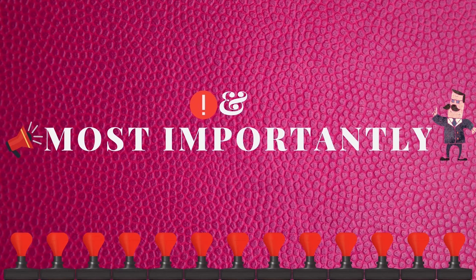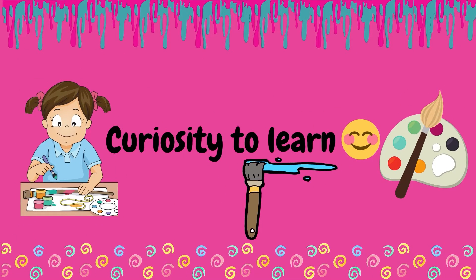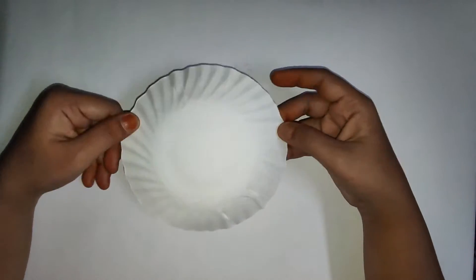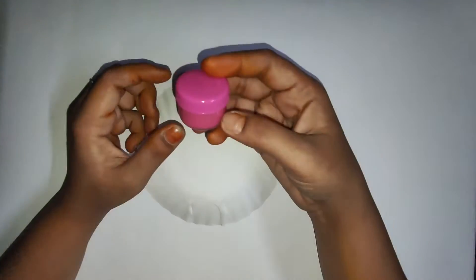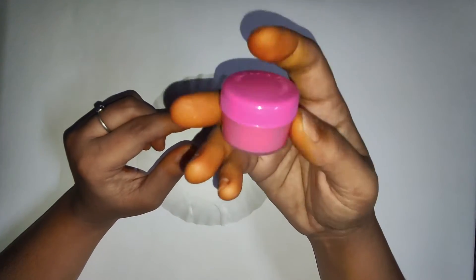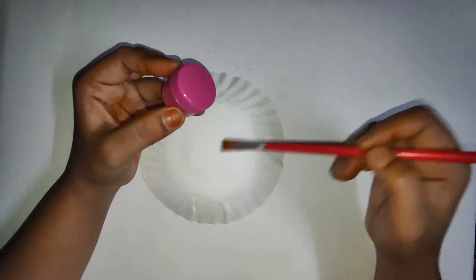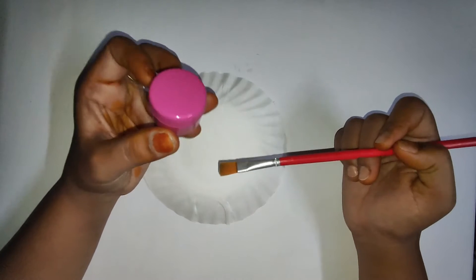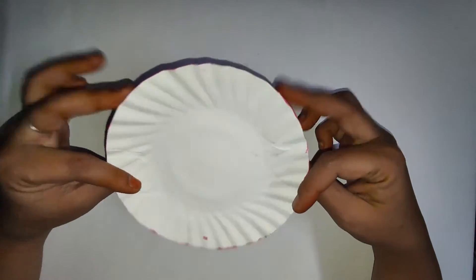And most importantly the curiosity to learn. Let's see how to create the pig. For that, first we need to take the paper plate. Here I am taking medium size paper plate. After that we have to color the paper plate with pink poster color. Once you're done with that, let it dry for few minutes. So now it's ready.